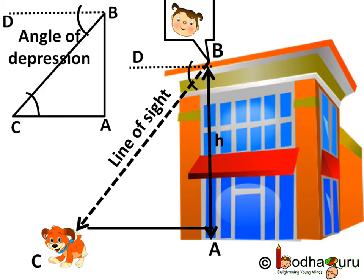As AC and BD are parallel, the alternate angle DBC and the angle of elevation ACB are equal.